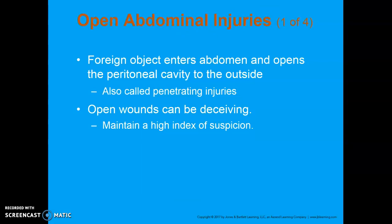Open abdominal injuries involve a foreign object entering the abdomen and opening up the cavity — these are your penetrating injuries: stab wounds and gunshot wounds. Open wounds can be very deceiving because tissue fills in the hole, so you can't see how far the object went in, and fat and other tissue plugs the hole so you don't see external bleeding. Things move around a lot in the abdominal cavity, so determining exactly what's injured is very difficult. We need to maintain a high index of suspicion for unseen injuries, internal organ damage, and anything potentially life-threatening.